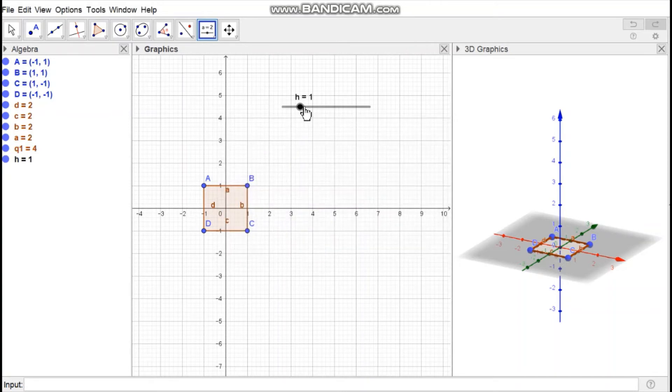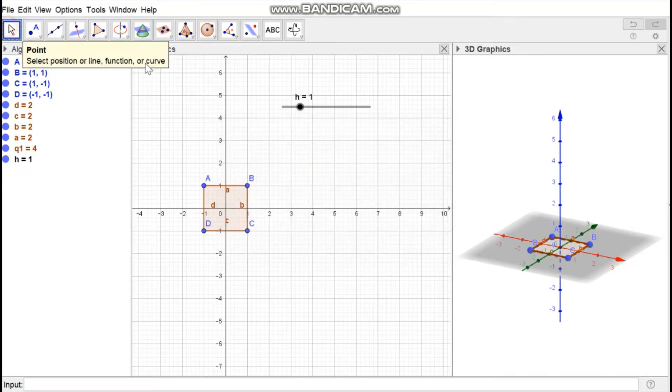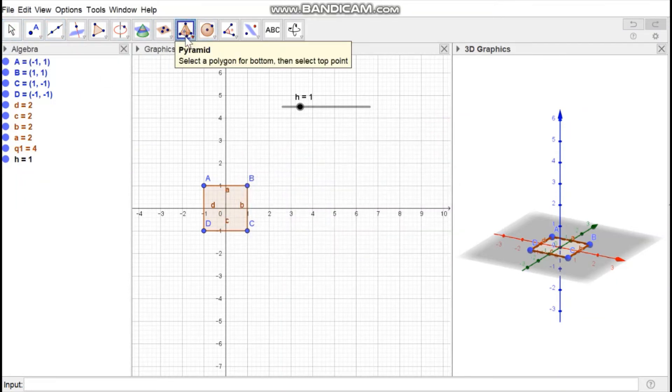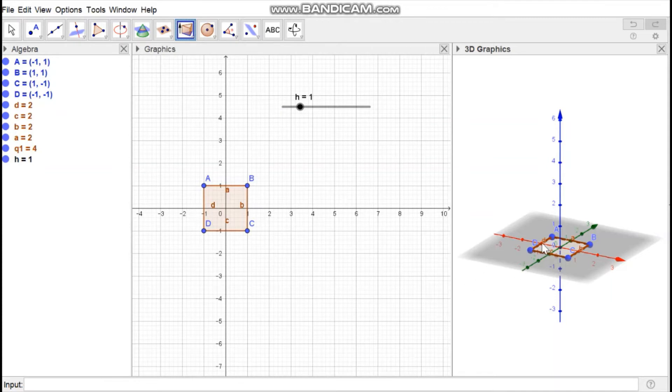The slider is created. Then select the 3D Graphics window, open the dropdown menu, and select Extrude to Prism. Then select the polygon in 3D view.